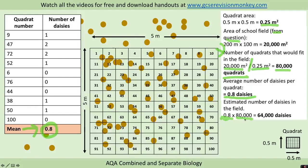So 0.8 times by 80,000 would give us a total estimate of 64,000 daisies.